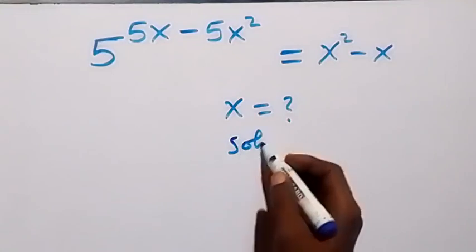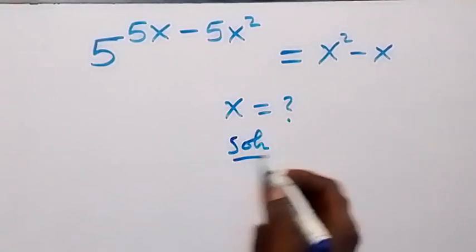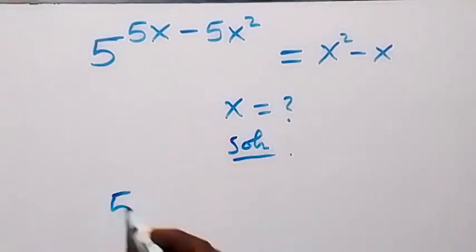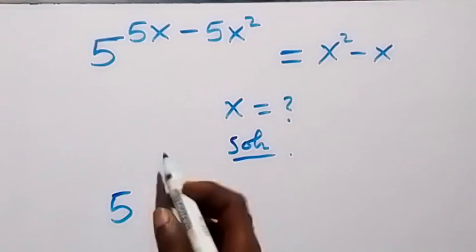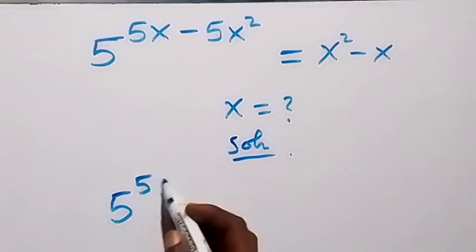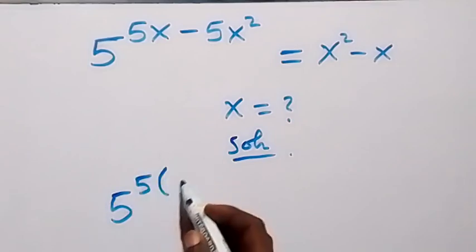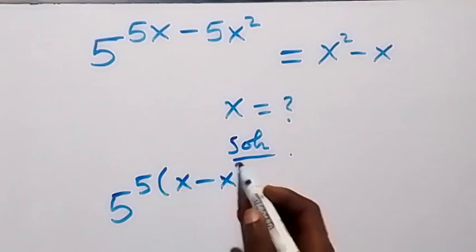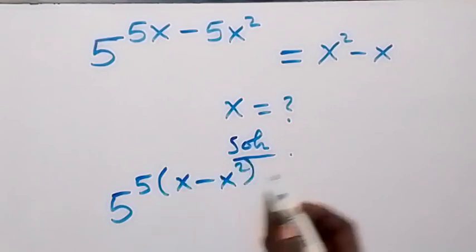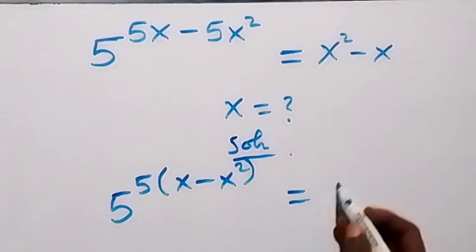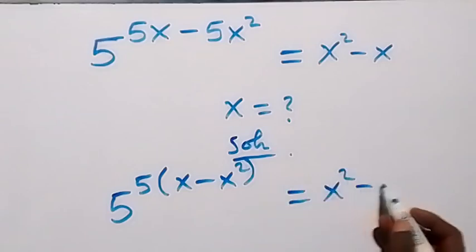What we have on the left here, we can factor 5 out in the power. And this will become 5 raised to power 5 into bracket (x minus x squared), then equals to x squared minus x.